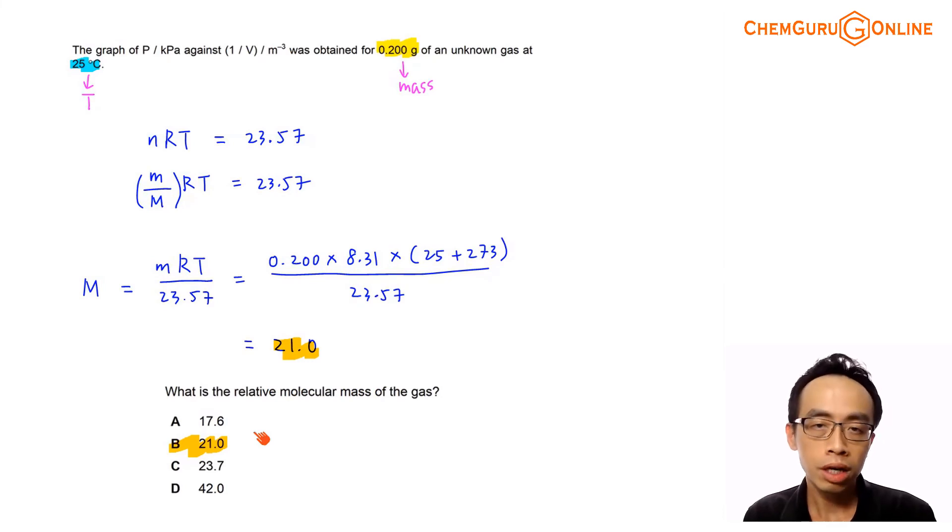Alright, so that was the discussion involving this exercise. Now basically it's fairly simple, just making use of the pressure against one over volume graph. I can find the gradient and this gradient tells me some information involving some of the terms inside my ideal gas equation and subsequently we solve for the unknown term. So if you have learned something useful from this video, please give me the thumbs up, like this video and subscribe to my YouTube channel for more weekly video lessons. That's all for now, I'll see you next week.